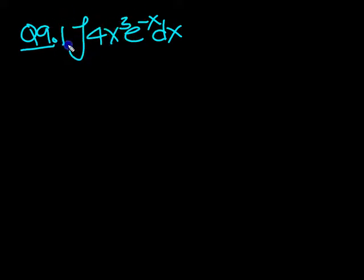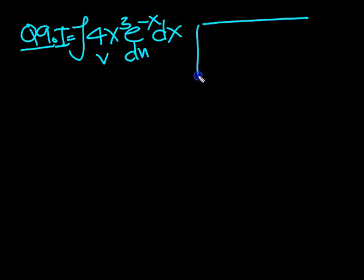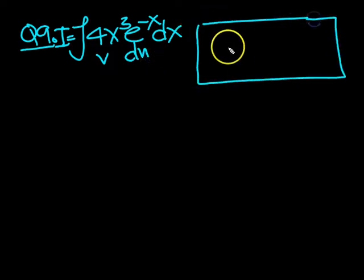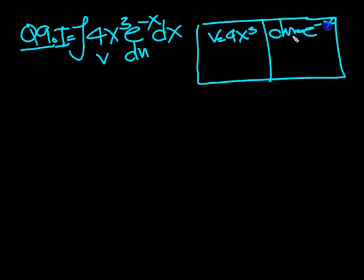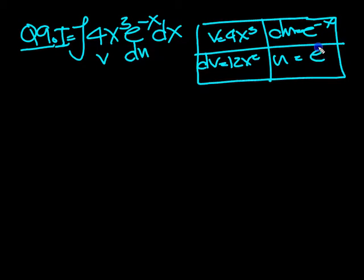So we're going to have an i, a j, and a k it looks like to me. So this would be v, and this is du. Let's draw our grid without further ado. So v is 4x cubed, and du will be e to the minus x. So dv will be 12x squared, and when you integrate e to the minus x, you get e to the minus x over minus 1.